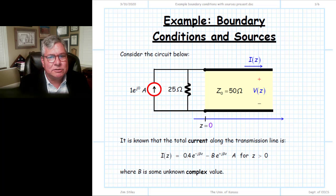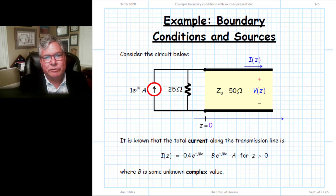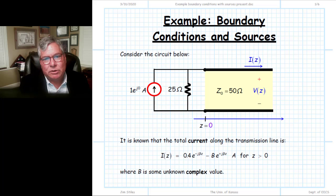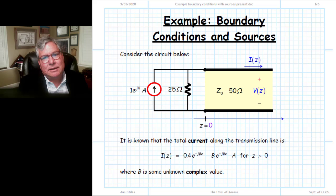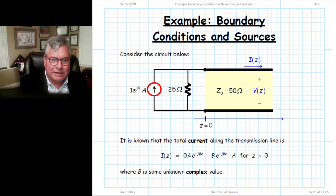We were able to solve boundary conditions and find relationships between V0+ and V0- for the Thevenin source, but we also want to handle more difficult sources and circuits. That is a skill we want to make sure we understand and are adept at — applying boundary conditions in order to solve and analyze transmission line problems. So let's look at this example.